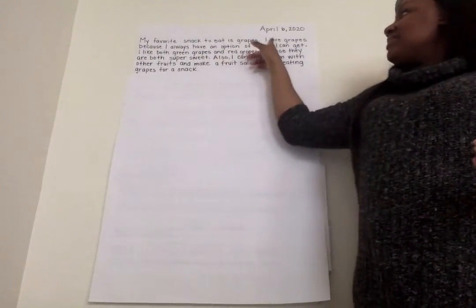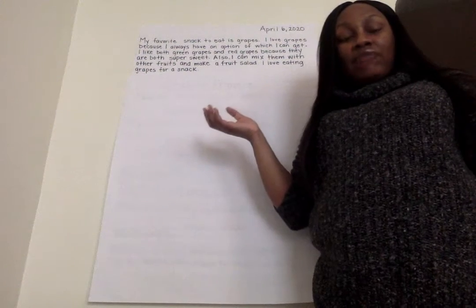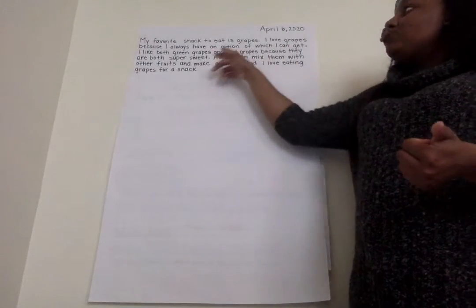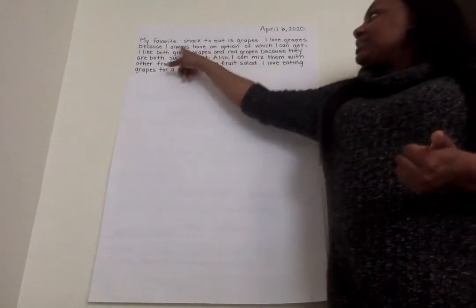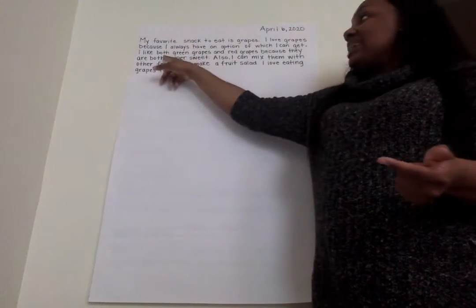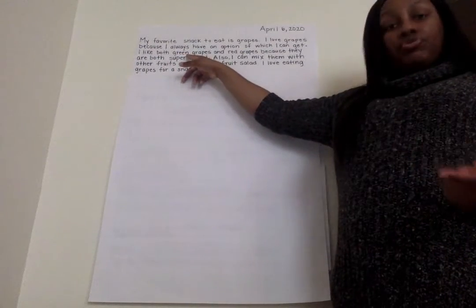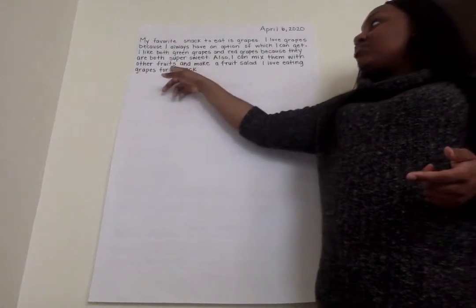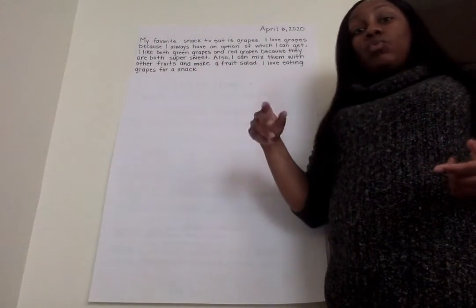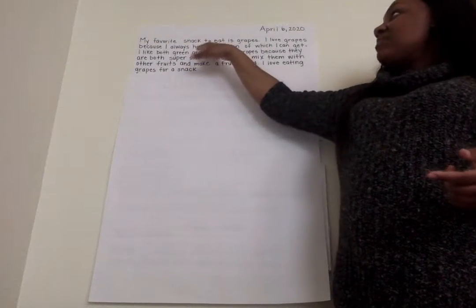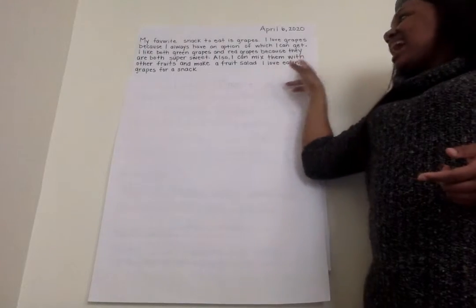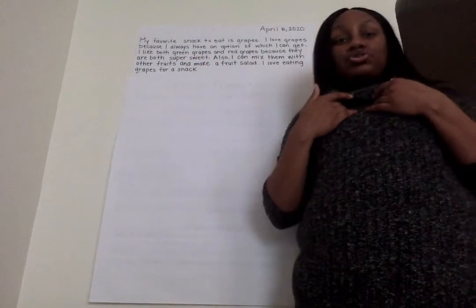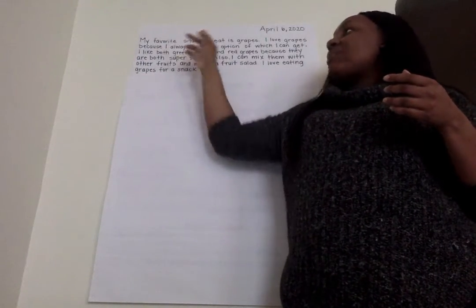I used really specific sentence starters to help me write about why grapes are my favorite snack. First I told you grapes were my favorite snack. Then I told you why I love them — I love grapes because I always have an option of which I can get. I can pick between green grapes or red grapes — those are my two options. I also said I can mix them with other fruit and make a fruit salad. I added so many details to explain why my favorite snack to eat is grapes. Then I closed my short story and said I love eating grapes for a snack.